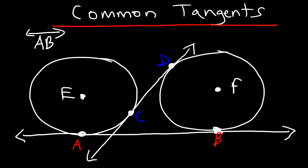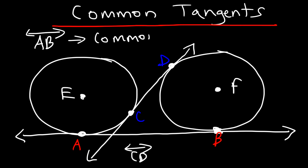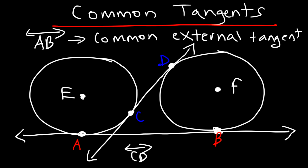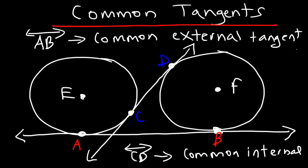What type of common tangent is line AB? Notice that the tangent line is outside of the two circles — so this is known as a common external tangent. Line CD is in between the two circles, so CD is a common internal tangent because it's between the two circles. AB is not between the two circles, so it's an external tangent.